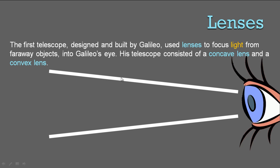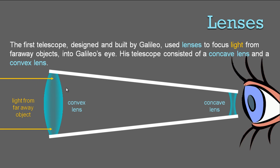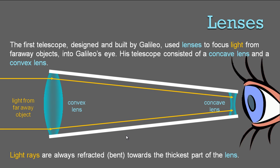Here we have the outer piece of the telescope, and here we have Galileo's eye — he had incredibly long eyelashes. Here's the convex lens at the bigger end, and a concave lens at the other end. Light from the far away object enters the convex lens and gets refracted towards the thicker part. Then it hits the concave lens, and since light rays are always refracted towards the thicker part, on a concave lens the thicker part is at the edges. So the light bends back outwards and goes into the eye.